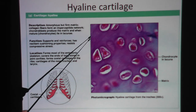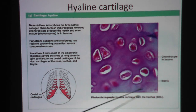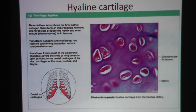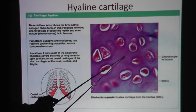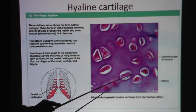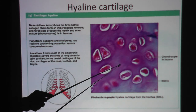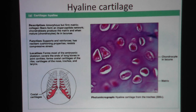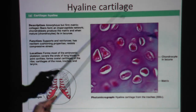Now this is hyaline cartilage — notice the matrix. It's not like fibrocartilage in which you saw the waviness of the collagen fiber pretty clearly. It is not elastic cartilage where you saw the thin, fine, irregular lines of elastic fibers. Instead, you see neither one of them — you have this kind of homogeneous background in the matrix. I call this 'watercolor.' When I look at this it reminds me of a watercolor painting. That watercolor look, along with the chondrocyte in lacuna, is hyaline cartilage.